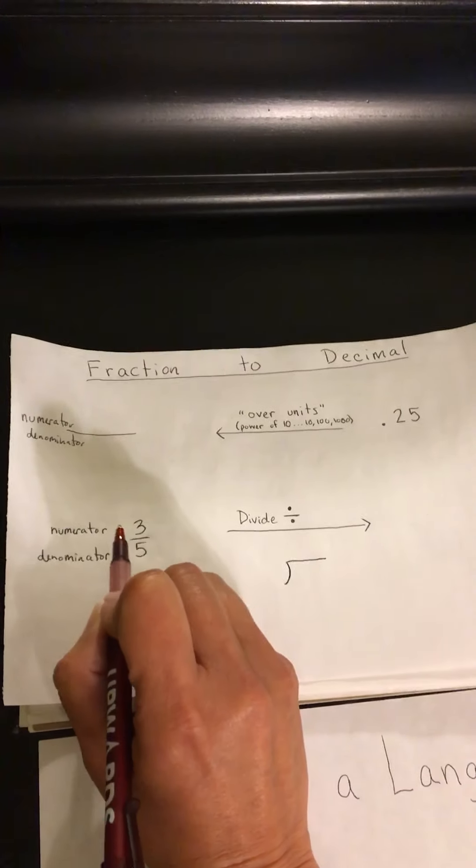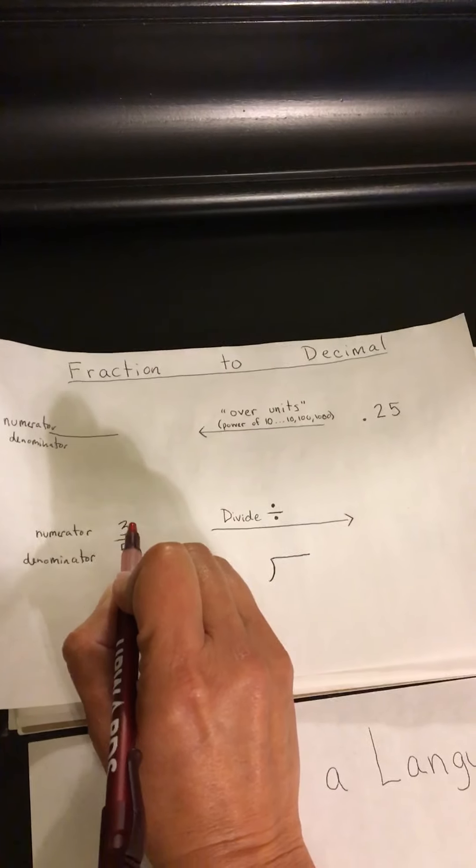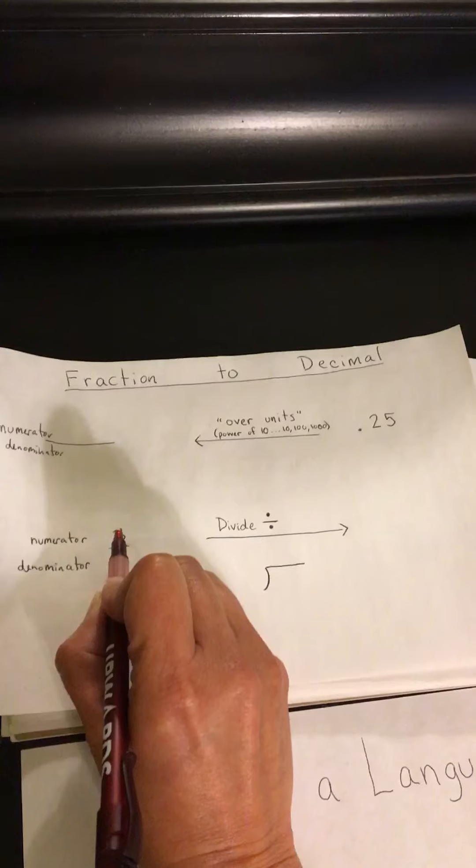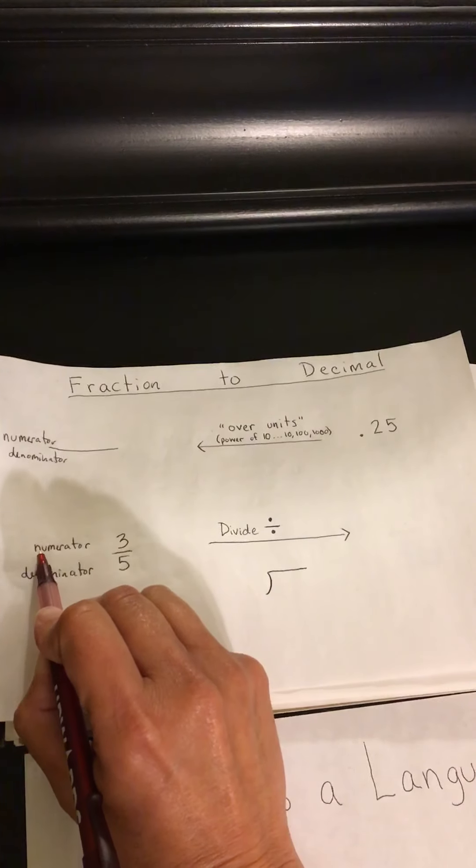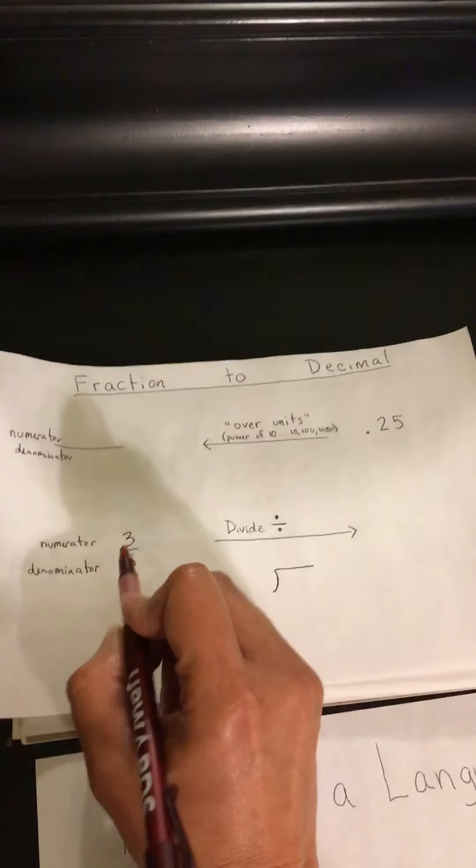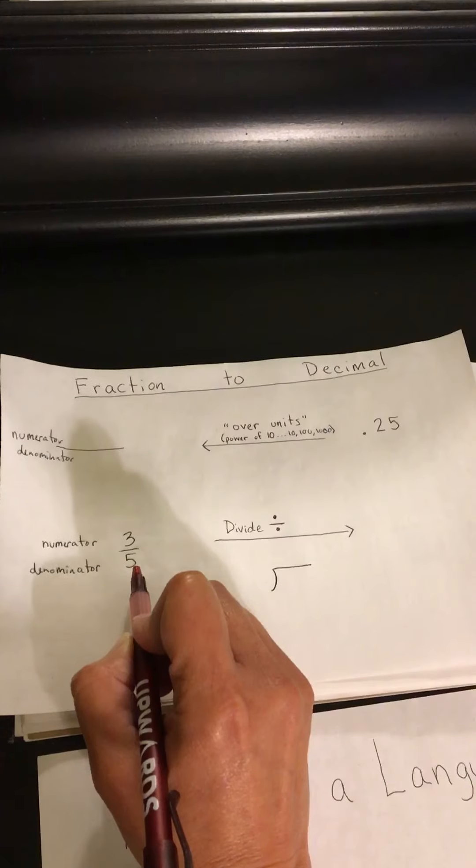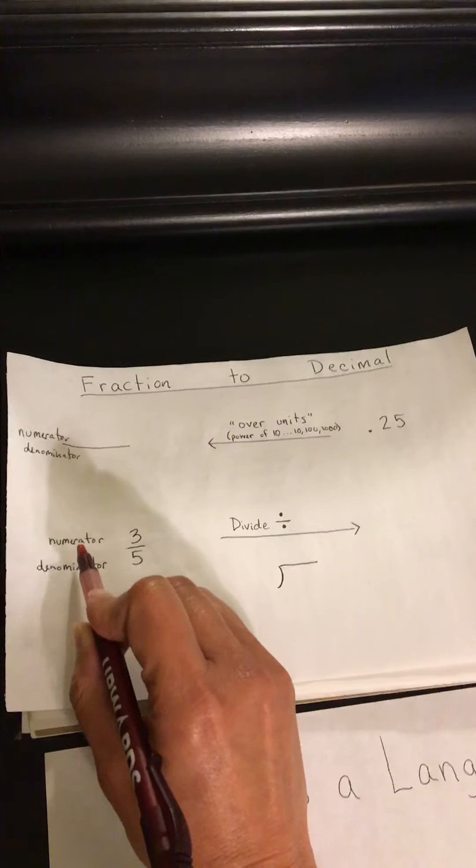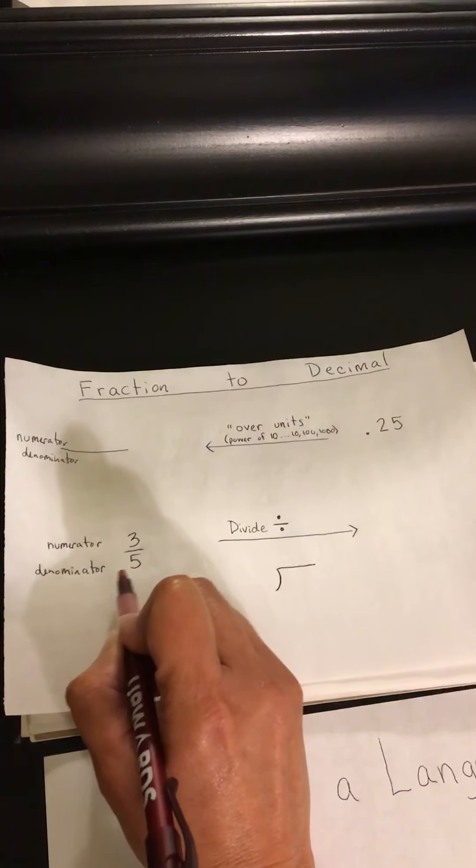When you look at a fraction, you have a term that is on the top, which is called a numerator. And the term on the bottom, which is down - that's how I always remember - is the denominator.